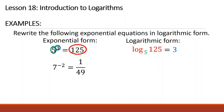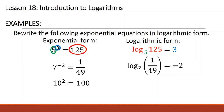We can have a negative exponent and a negative result in logarithm. Next, 10 raised to 2 is equal to 100. In logarithmic form, this is logarithm of 100 base 10 is equal to 2.